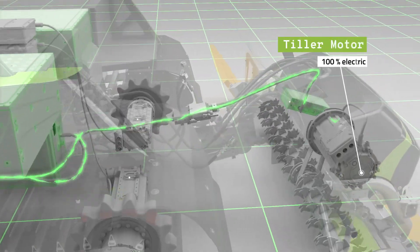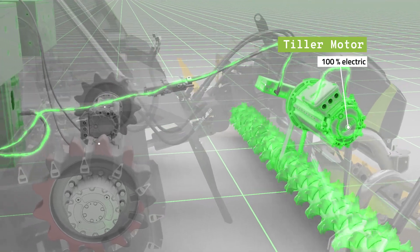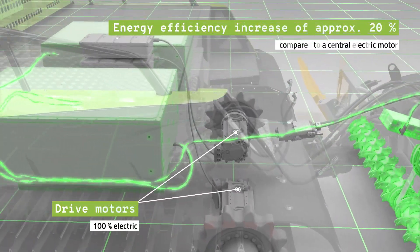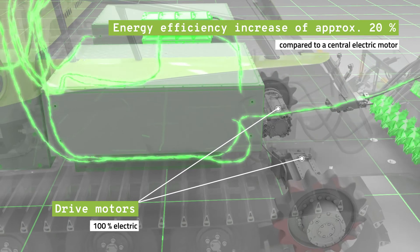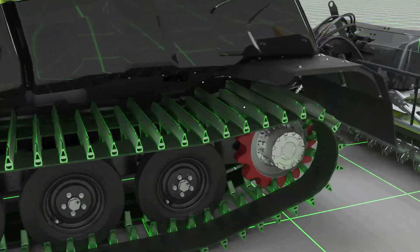The hydrostatic drive and the drive of the tiller have been replaced by three electric motors. This offers direct power transmission and an efficiency increase of about 20% compared to a central electric motor.